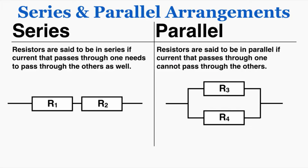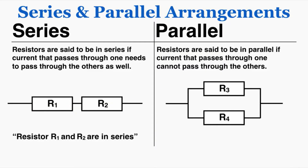Both series and parallel are names for paths that current can take through resistors. Resistors are said to be in series if current that passes through one needs to pass through the other as well. Current is being pushed by other electrons, so it can't really move backwards. That means if this electron passes through resistor R1, there's no way it can turn back — it also has to go through R2. So we would say that R1 and R2 are in series.